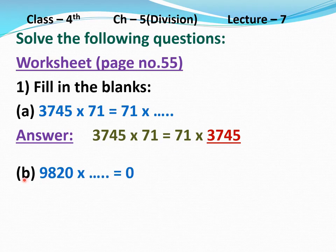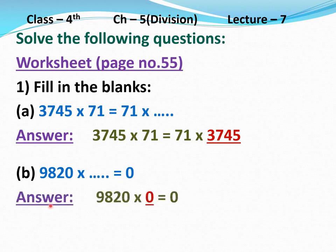Part B: 9820 multiply dash equal to 0. We will multiply by 0. Answer: 9820 multiply 0 equal to 0.